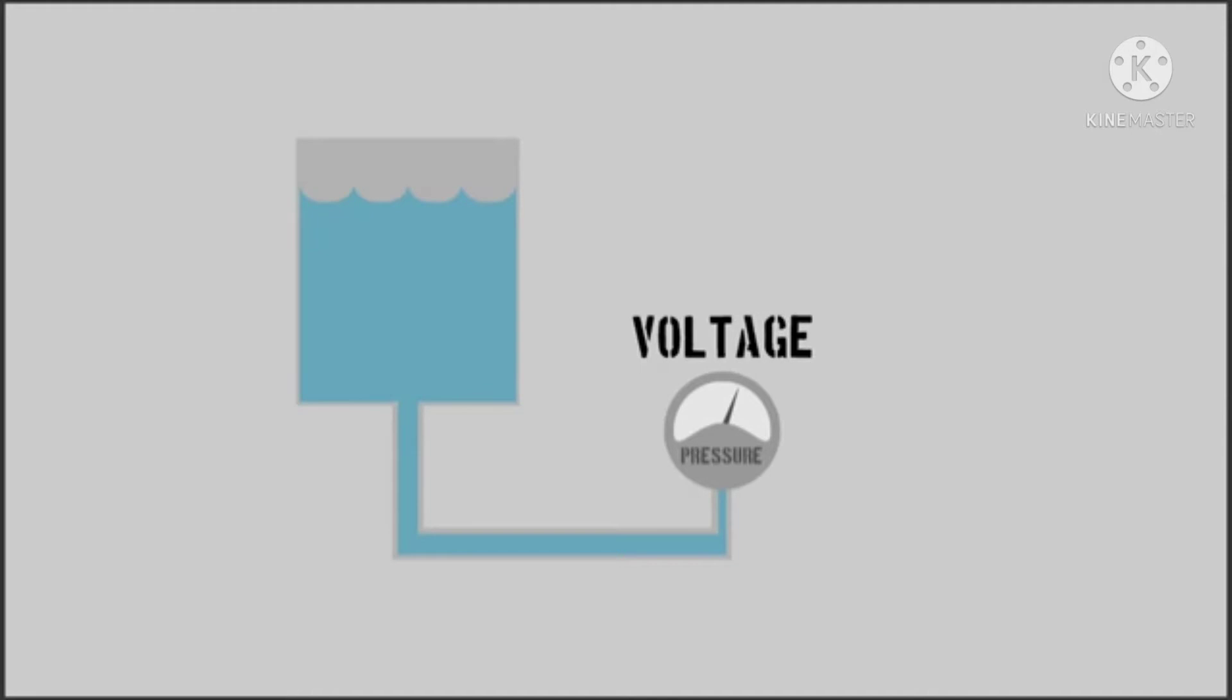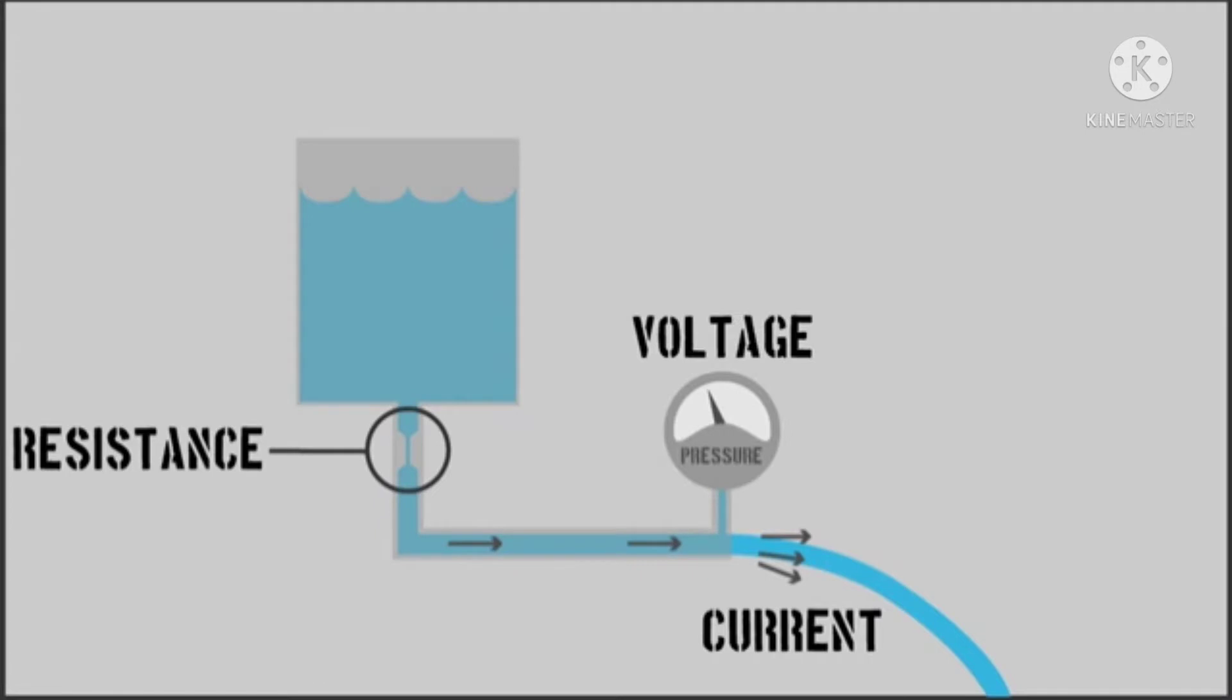First, voltage can be interpreted as electric pressure, current as electric flow, and resistance as electric obstruction.